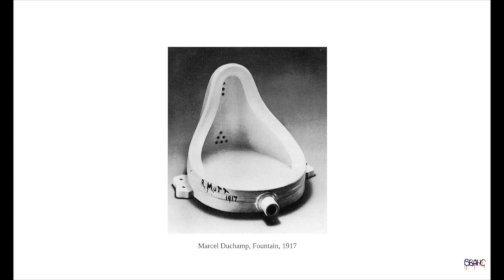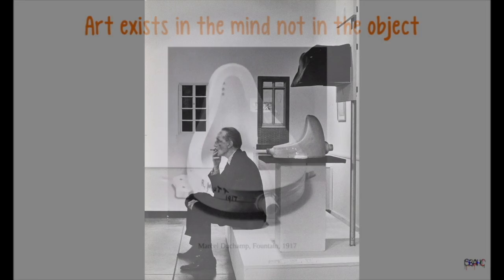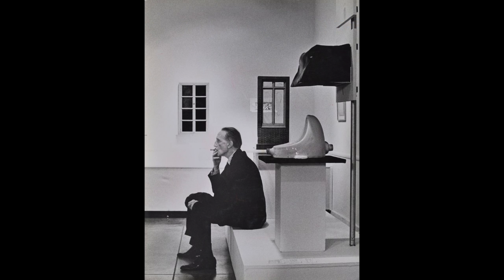If Duchamp, a well-known artist, said that this was art, why couldn't it be? This opened the question: if art was not in the object, where was it? For Duchamp, the aesthetic experience was in the idea behind the art. This view changed the significant aspect of art from being primarily visual to being primarily conceptual. This shift would allow for many new art forms to evolve, but it also meant that decoding works of art would be more difficult.